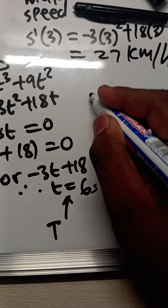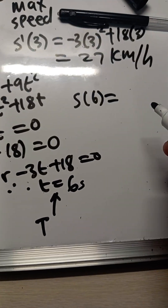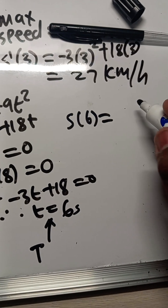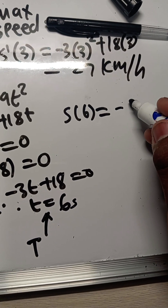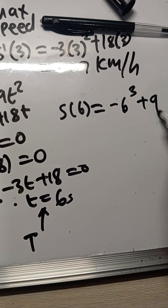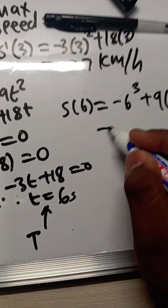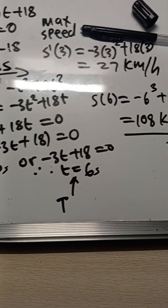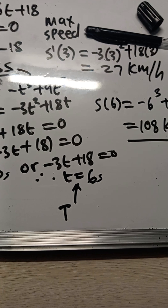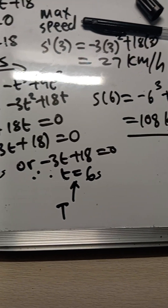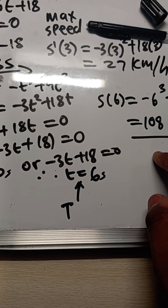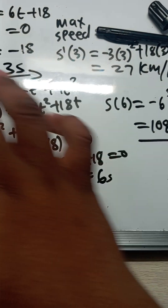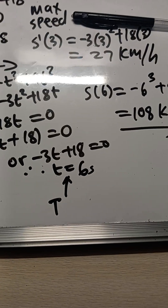Since they want the distance between the two towns, calculate s(6) using the original function: s(6) = -(6³) + 9(6²) = -216 + 324 = 108 kilometers. That is the final answer - 108 kilometers is the distance between town P and town T.